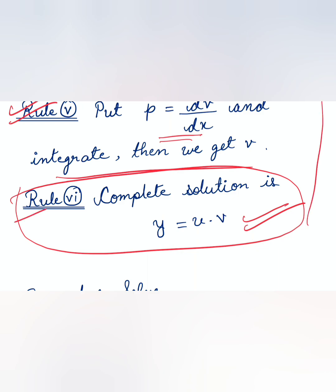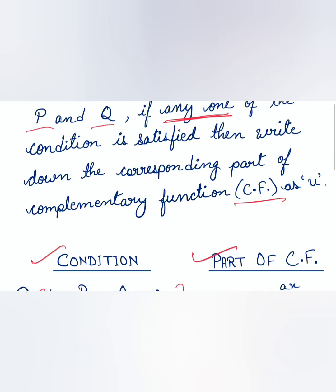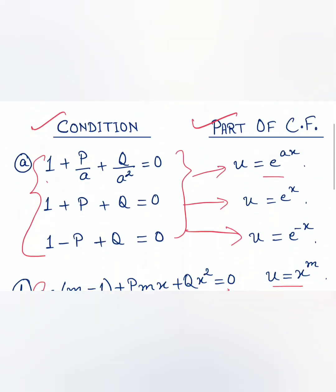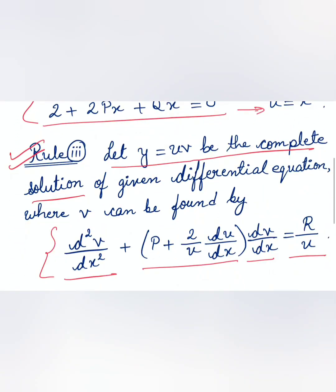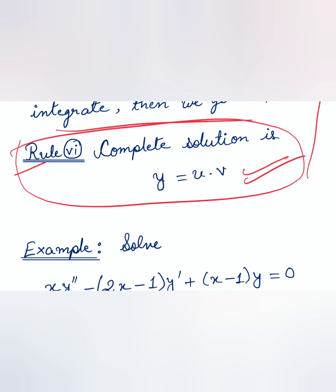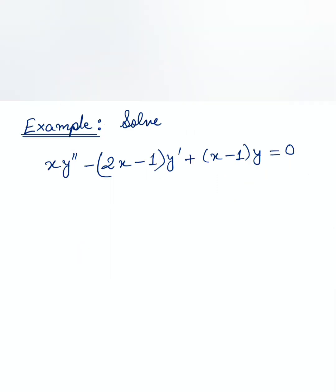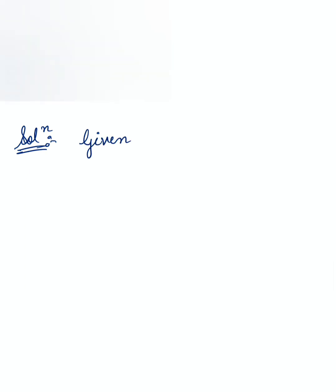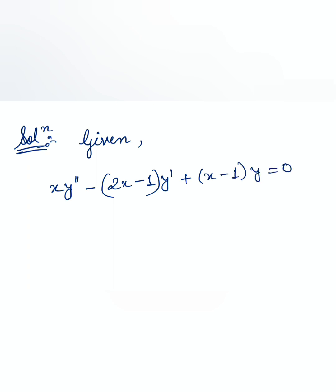Now let us understand this method by solving an example so that all doubts are cleared. Consider: solve x·y'' − (2x − 1)y' + (x − 1)y = 0. Let us write the given differential equation.